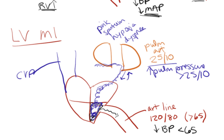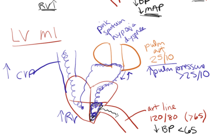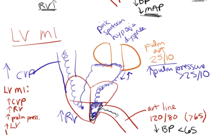If your left ventricular MI continues to worsen, you'll have continued backup of fluid. The fluid isn't flowing out of your left ventricle — it backs up into your lungs, and from there backs up into your right ventricle. You'll have increased right ventricular pressures, that fluid will continue to back up from your vena cava, so you'll have increased CVP. With our left ventricular MI, if it gets bad enough, we're going to have increased CVP, increased right ventricular pressure, increased left ventricular pressure, and then decreased arterial pressure.